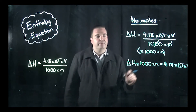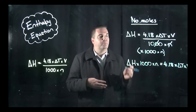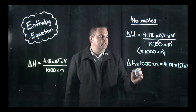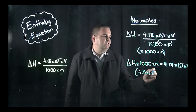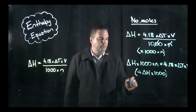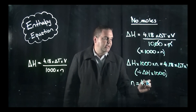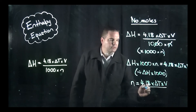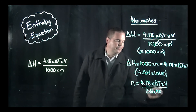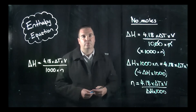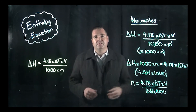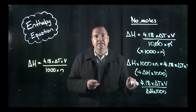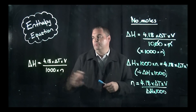That first step — multiplying by 1,000 times N — has been the same for all three rearrangements. However, this time we want to get rid of delta H and 1,000, so we divide by delta H times 1,000. We end up with number of moles equals 4.18 times the change in temperature times the volume, divided by delta H times 1,000. That's your rearranged equation for working out number of moles. If you do that first step each time of multiplying by 1,000 times N and cancel out what you don't need, you'll be fine.